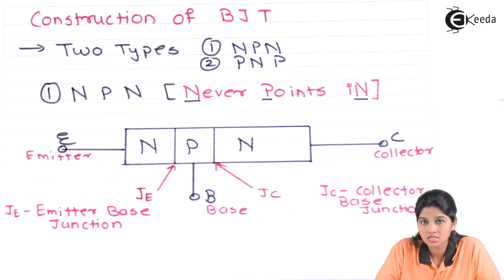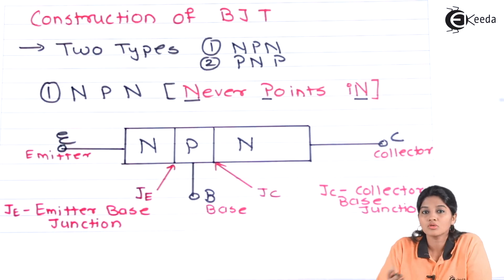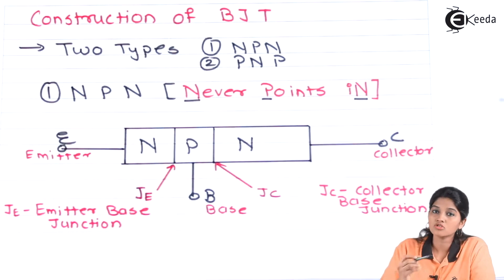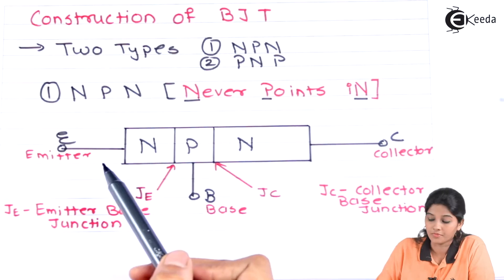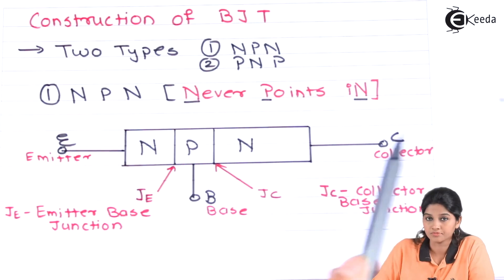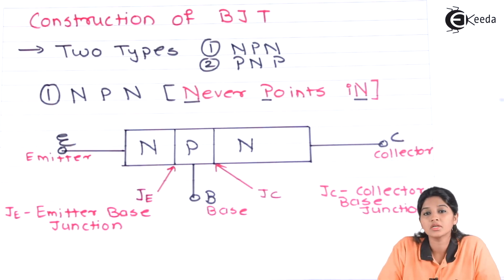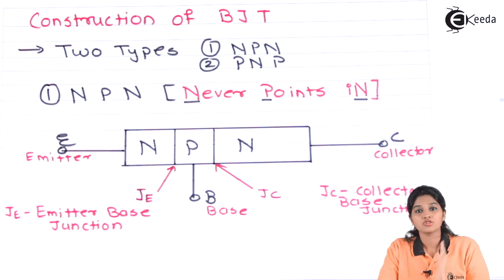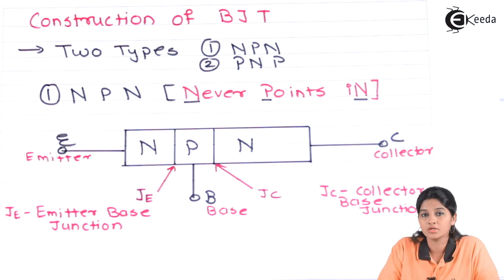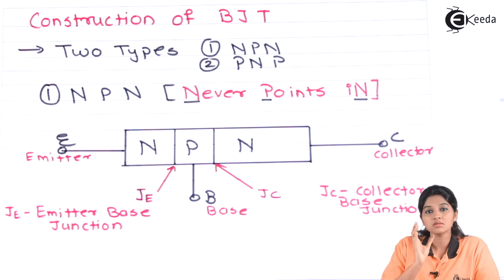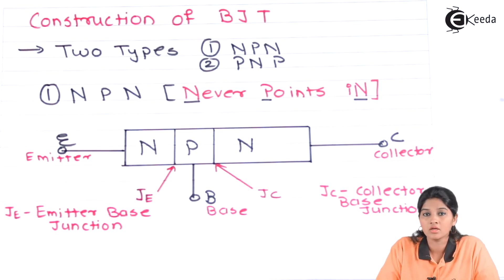The BJT is a three terminal device, that means it consists of emitter, base and collector. In case of NPN transistor, P-type semiconducting material is present in between two N-type semiconducting materials and it has three terminals: emitter, base and collector. The emitter terminal, as its name indicates, emits the electrons and is present on one side of the transistor. The emitter region is a heavily doped region. The base terminal is present in between the two semiconducting materials and it is thin as compared to emitter and collector. The base region is a lightly doped region.